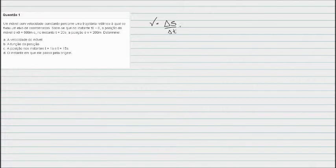No instante T0 igual a 0, a posição do móvel é x0 igual a 500 metros. No instante T20, a posição de 200 metros. Determina a velocidade do móvel. Então para a gente determinar a velocidade do móvel, a velocidade é a variação de espaço pela variação do tempo.